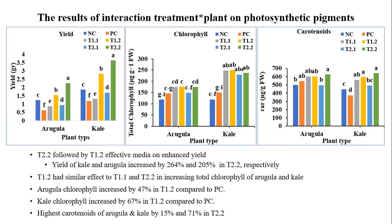Photosynthetic pigments, including chlorophyll and carotenoid, were significant across different mixed growing media. Treatment 1.2 was the most effective growing media for improving total chlorophyll in arugula and kale. Other mixed growing media also showed significant differences in total chlorophyll in kale compared to their controls. The highest carotenoid content in both plant species was obtained in treatment 2.2 — for example, arugula carotenoid increased by 15% and kale carotenoid increased by 71% in treatment 2.2 compared to their respective positive controls.